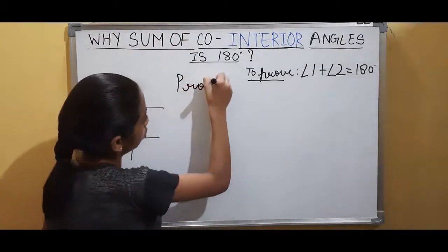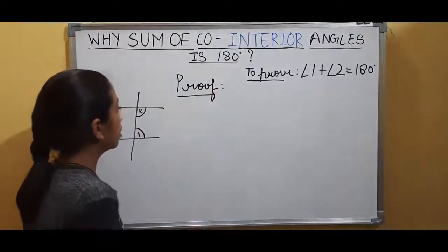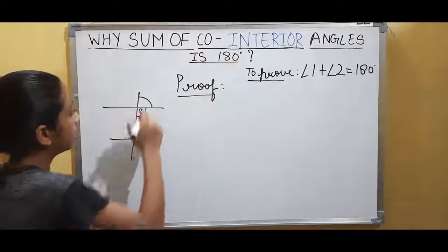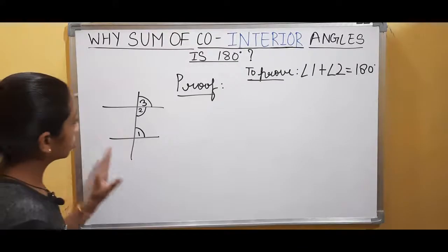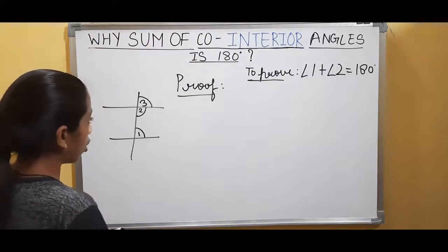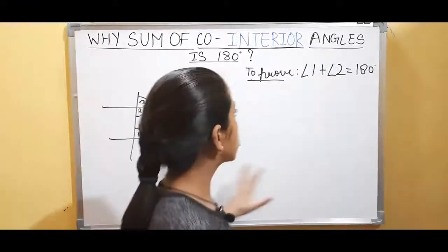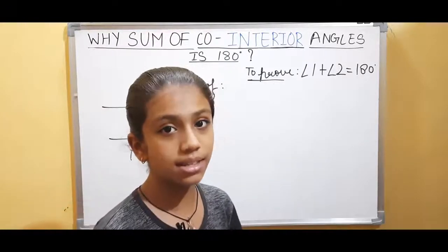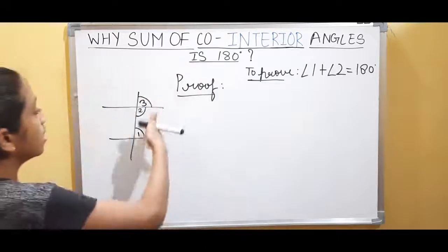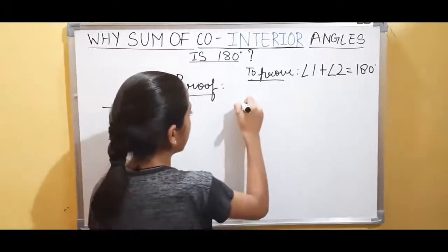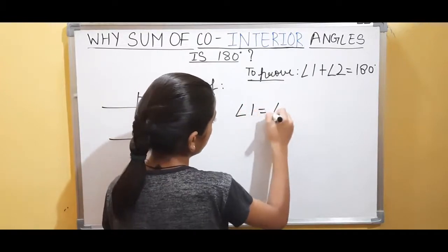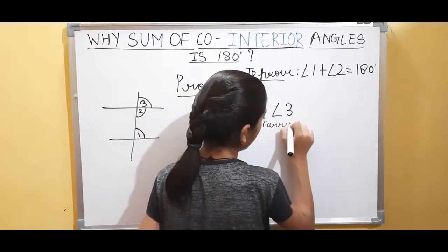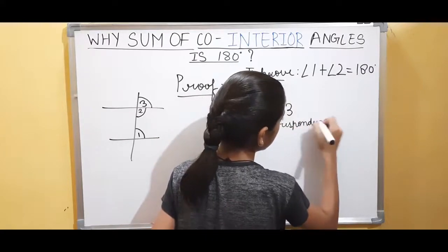Proof: I've made a new angle here — let's name this angle as angle 3. As we already know, angle 1 is equal to angle 3. How? Because angle 1 and angle 3 are corresponding angles. We already know that corresponding angles are equal in their measure, so angle 1 is equal to angle 3 because they are corresponding angles.